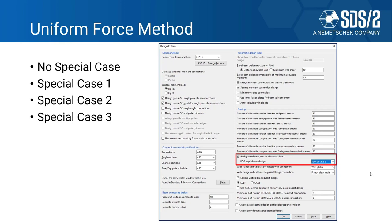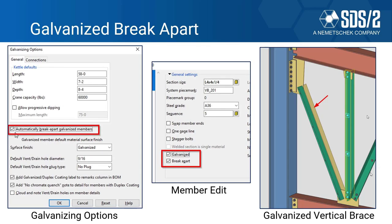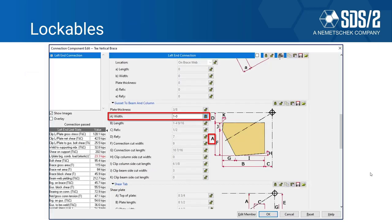We'll be covering the uniform force method — taking a deeper dive into no special case, special case one which involves physically moving the work point, special case two, and special case three, along with adding the gusset beam interface forces to the beam. Every member inside SDS 2 can be galvanized, and we're covering a break-apart option. On the right you can see a galvanized vertical brace — if it's automatically broken apart, the other angle for the double material breaks off into its own separate member so all members can go separate for galvanizing.